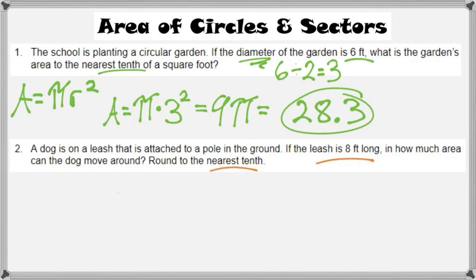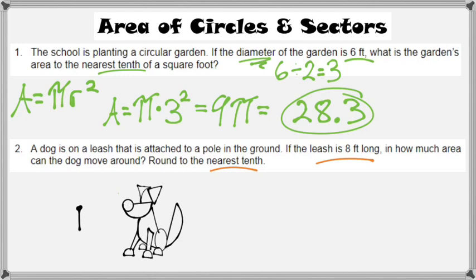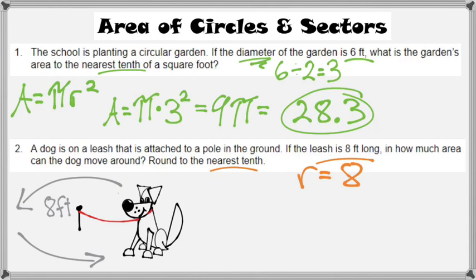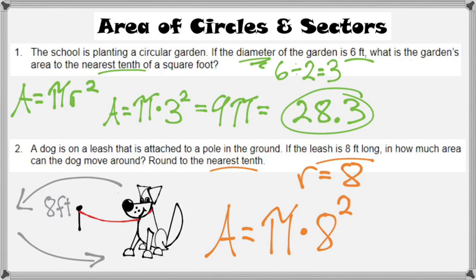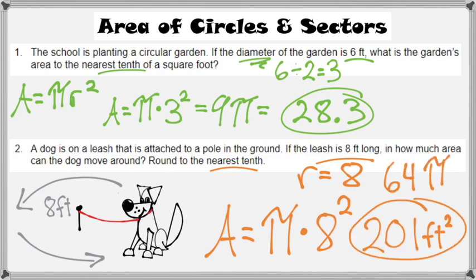A dog is on a leash attached to a pole. The leash is eight feet long — representing the radius of the circle the dog can move in. The area is pi times 8 squared, which is 64 pi. Taking 64 times 3.14 and rounding to the nearest tenth gives 200.96, which rounds up to 201 square feet.